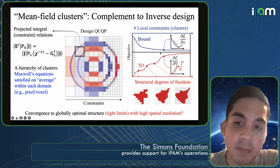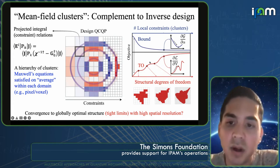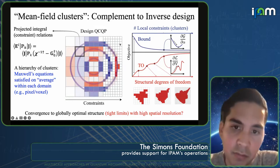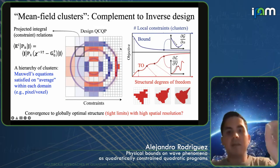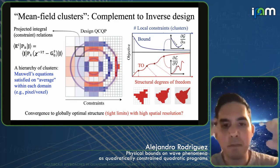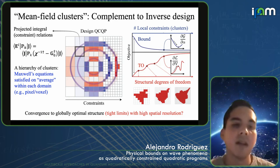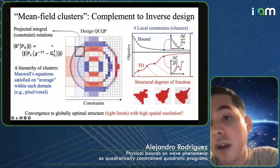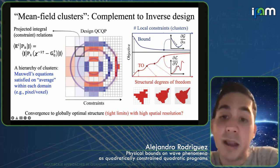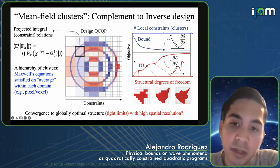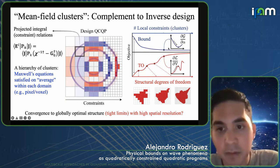One of the mathematical questions you can ask is: can you guarantee that in the limit as you have finer and finer discretizations — pixel-level constraints — does the bound become tight? Can you close the potential performance gap between structural optimization and these limits?